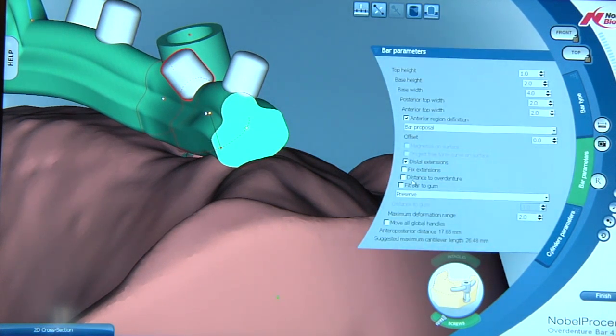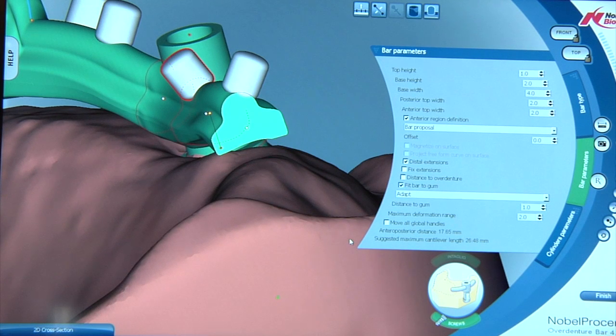Down at the bottom, you have a fit to gum feature in here. So what it does is it takes the bar and fits it directly to the soft tissue. If we change this to fit bar to gum feature and activate the feature, notice what happens. The bar will contour itself to the ridge and if we want to adjust how far off the ridge we are, we have a distance to gum here.